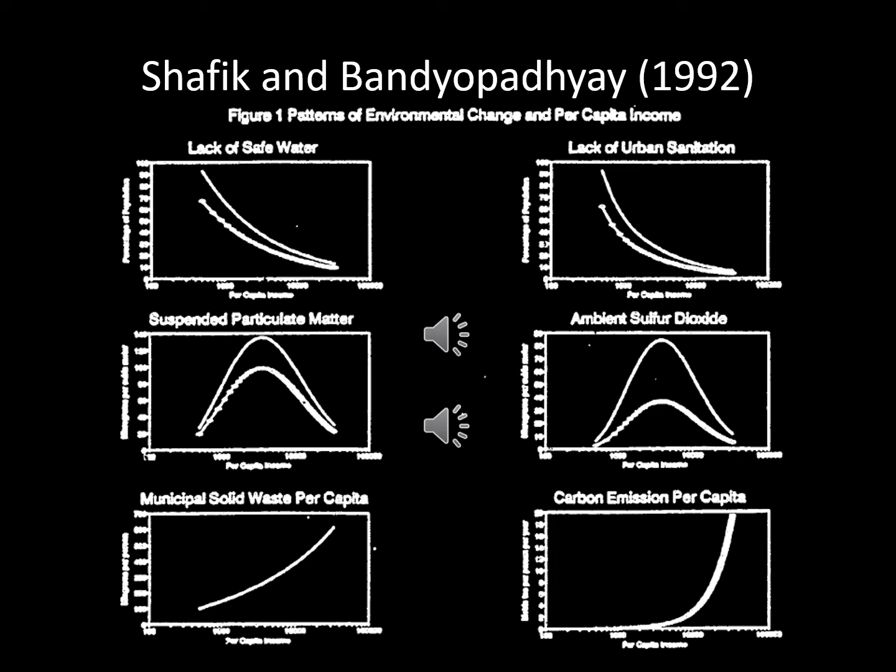Two pollutants decreased continuously with income: urban sanitation and water pollution. Two others increased continuously with income: carbon emissions and municipal waste. While the remaining four pollutants showed paths that were unrelated to income. This study reminds us that not all pollutants are alike.